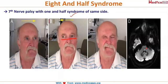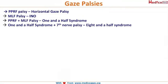Here is an easy revision summary: PPRF palsy causes horizontal gaze palsy. MLF palsy causes internuclear ophthalmoplegia. PPRF along with MLF palsy causes one-and-a-half syndrome. And one-and-a-half syndrome plus seventh nerve palsy gives you eight-and-a-half syndrome.